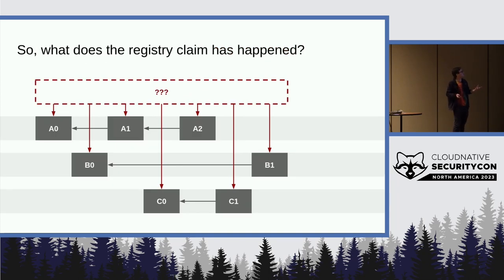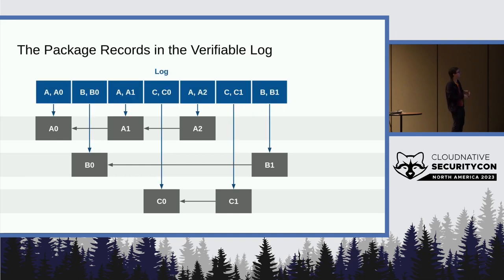So what does the registry claim has happened? And the answer to that is the sequence of values that are in its verifiable log. And each of these records has both the record itself hashed and the name of the package hashed into it. So you can tell that this A0 was put into A, right, it's been appended to the package A.